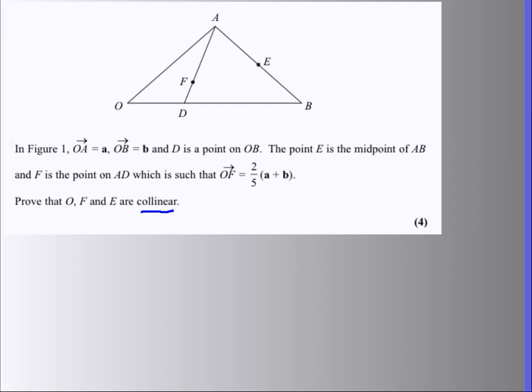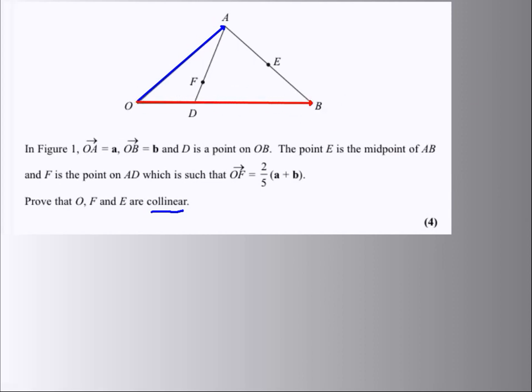With vectors questions, we have an idea often to just make it clear what you're dealing with. We've got OA as vector a - I'm going to put that on the diagram. And I've got OB as vector b - I'll put that on the diagram. So, vector a, vector b, and we have E at a midpoint, just there.